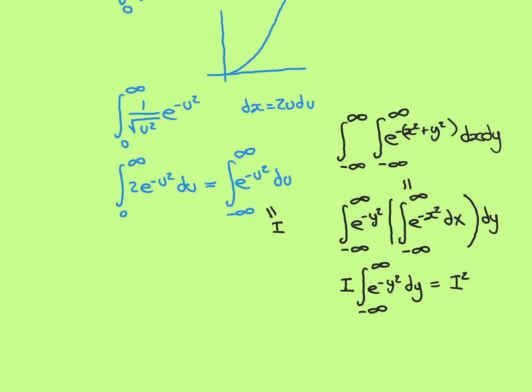We have shown that gamma of a half is equal to the value of the famous Gaussian integral, which is the square root of pi. I was just going to remind you of the argument as to why the Gaussian integral comes out as the square root of pi, because it's such a wonderful argument.